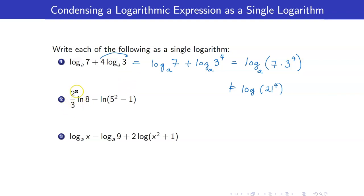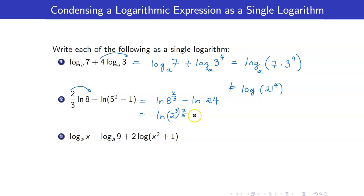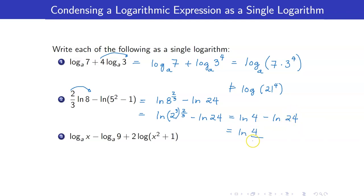For the second condensing example: get rid of the coefficient, so this becomes ln of 8 raised to 2 thirds, minus ln of (5 squared minus 1), which is 24. Now, 8 raised to 2 thirds — 8 is 2 cubed, raising to 2 thirds gives 2 squared, so that's ln of 4. Combined: ln of 4 minus ln of 24 equals ln of 4 over 24, which simplifies to ln of 1 sixth.